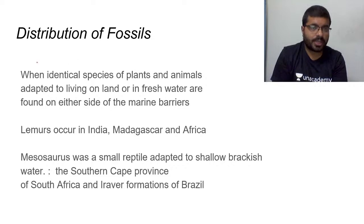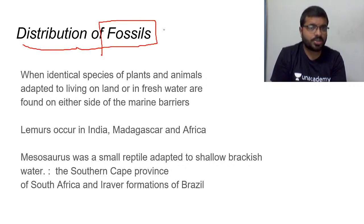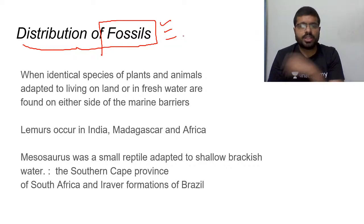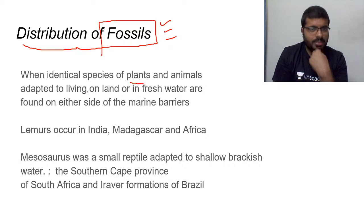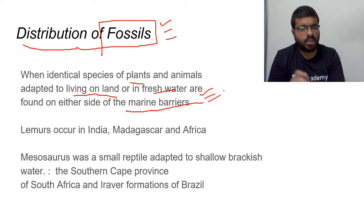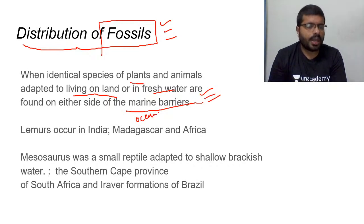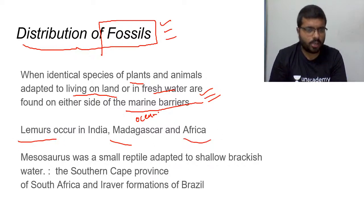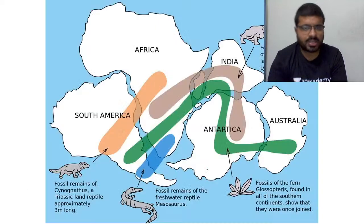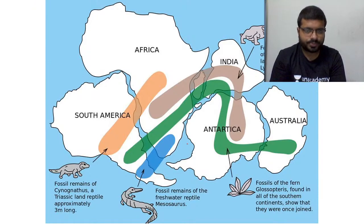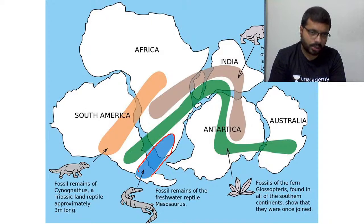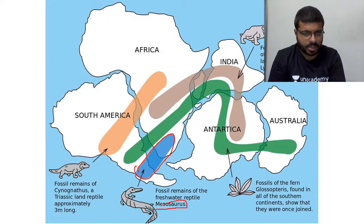Distribution of fossils is another major evidence. When identical species of plants and animals adapted to land or freshwater are found on either side of marine barriers — meaning oceans — it suggests the continents were once connected. For example, the lemur is found in India, Madagascar, and Africa. The Mesosaurus, a small reptile adapted to shallow brackish water, is found in both South Africa and Brazil.